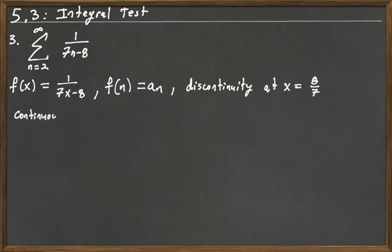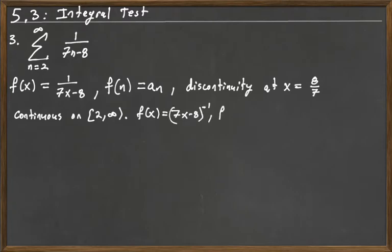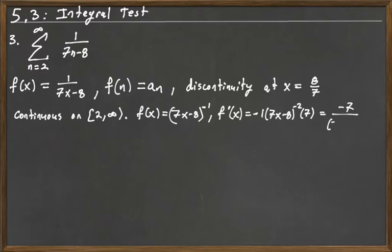Our function is continuous on the interval closed at 2 and open at infinity, so we have that condition met. It is positive on that interval as well. We just need to make sure it's decreasing, so we find the first derivative. We rewrite the function as (7x minus 8) to the negative 1, and the derivative is negative 1 times (7x minus 8) to the negative 2, times 7 by the chain rule — that's negative 7 over (7x minus 8) squared. That's certainly negative on the interval 2 to infinity, so the function is decreasing.